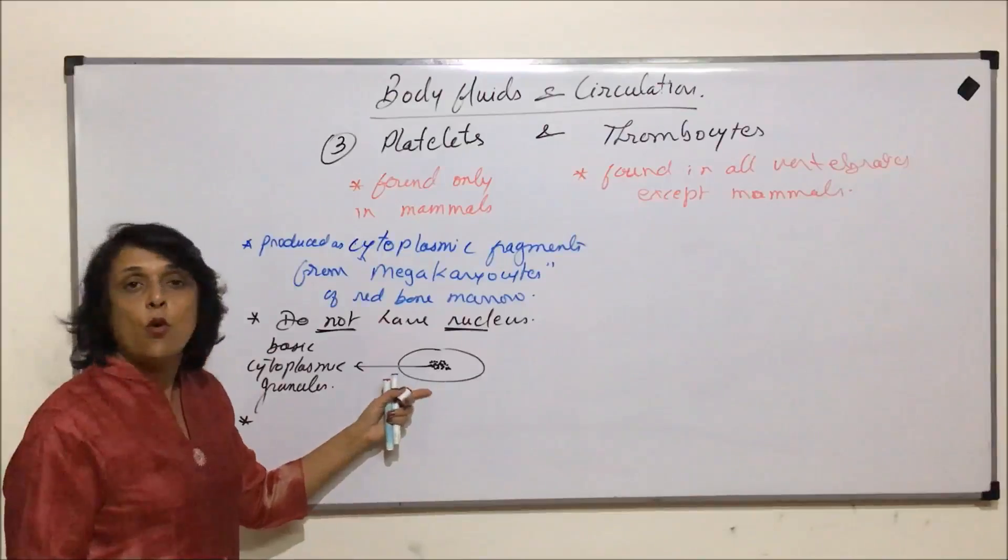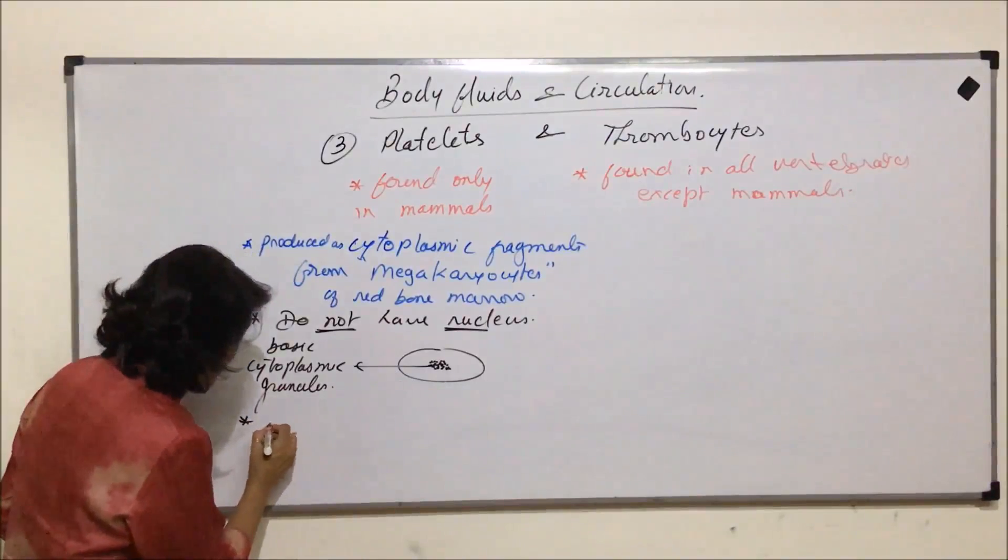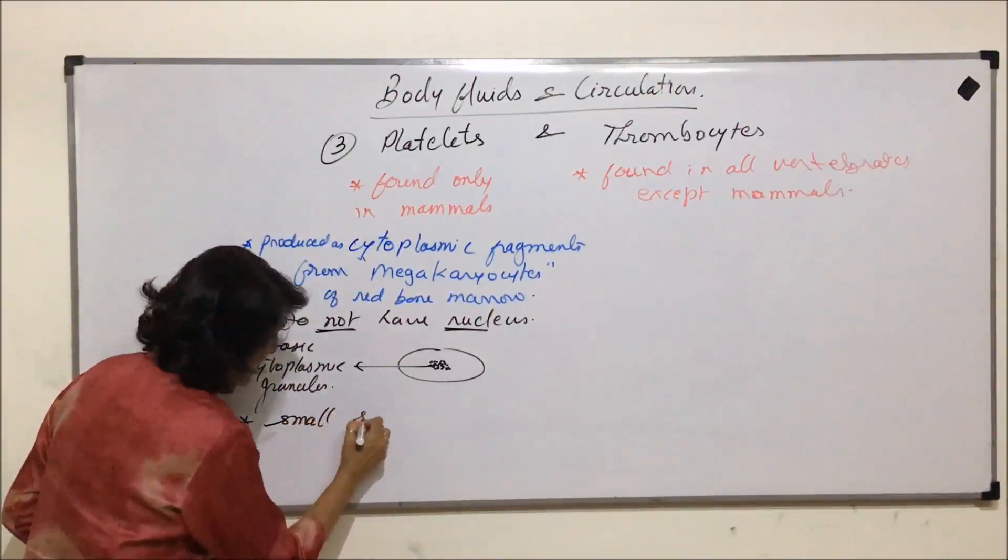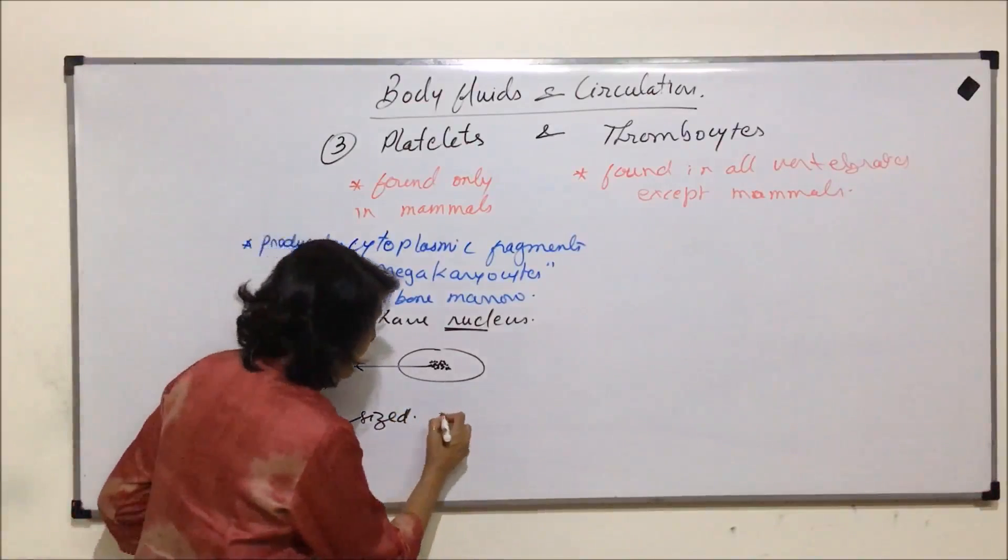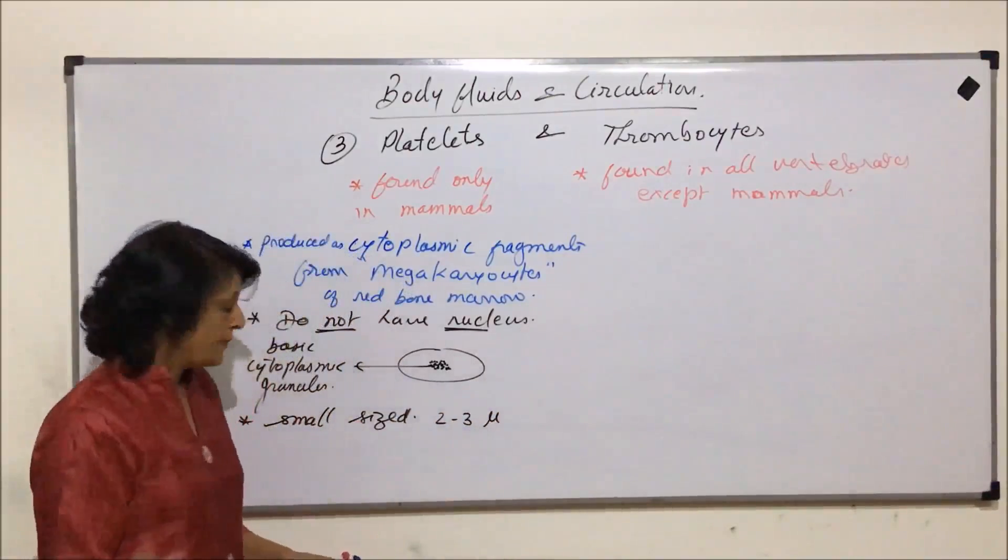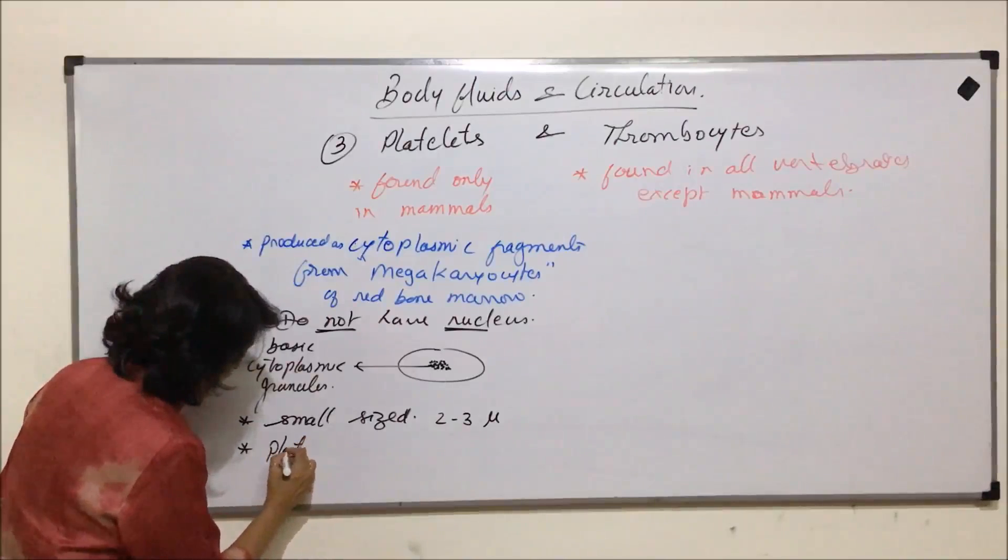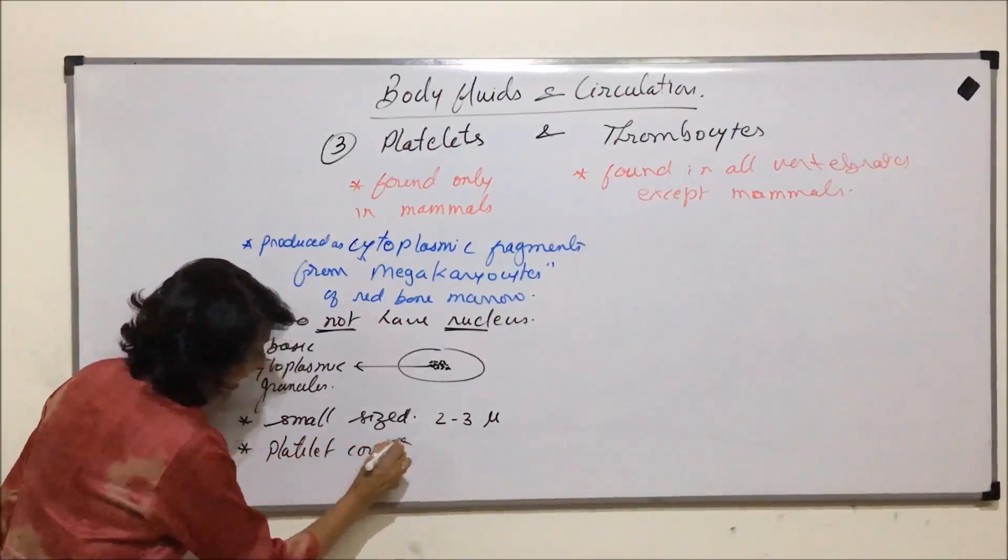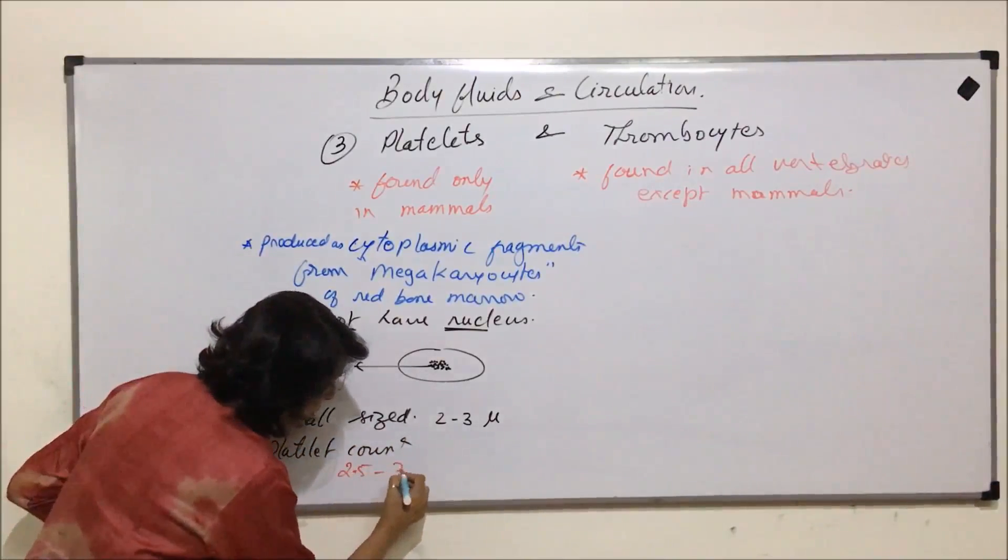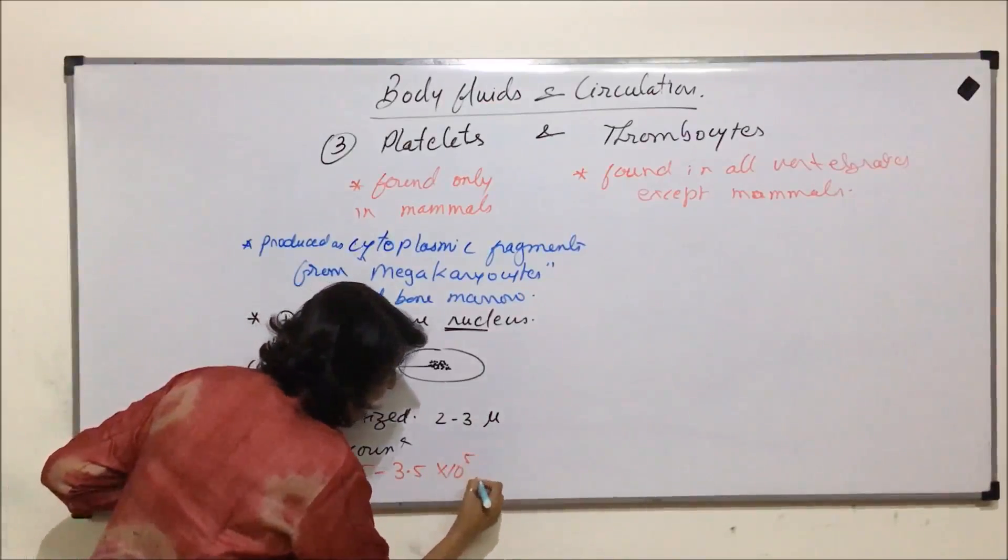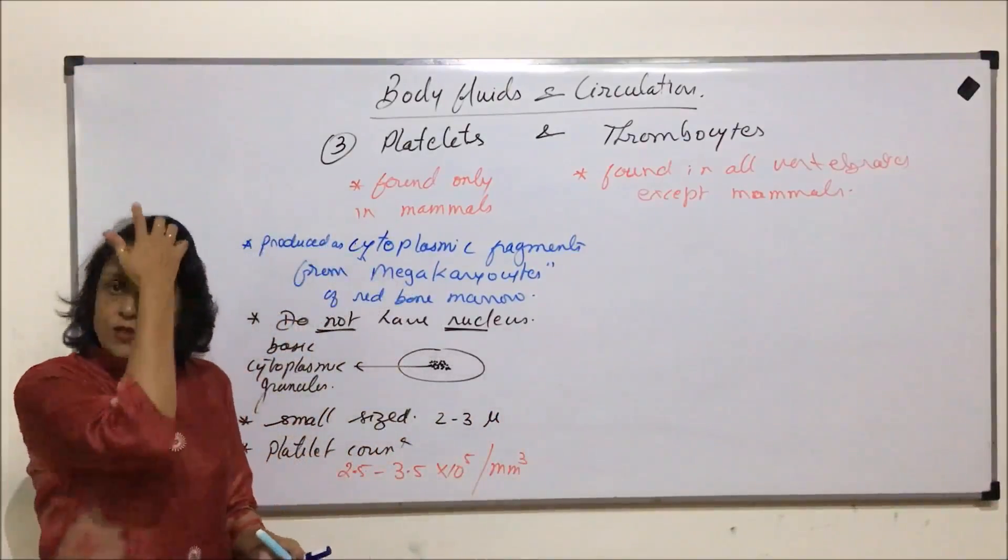Platelets are oval in shape and small sized, normally 2 to 3 microns. Their number, known as platelet count, is 2.5 to 3.5 × 10^5 per cubic millimeter. So number is also more.